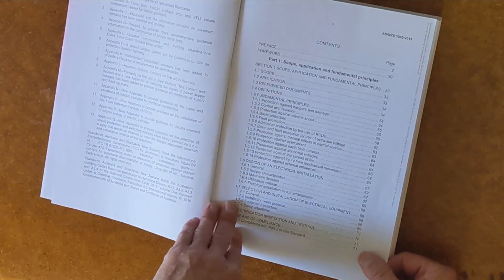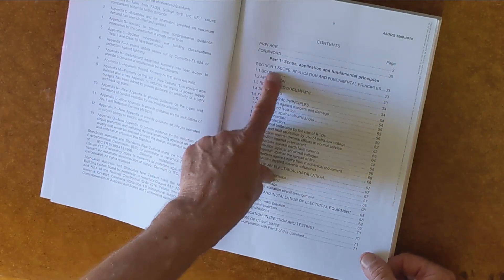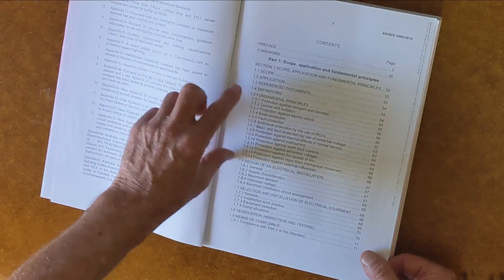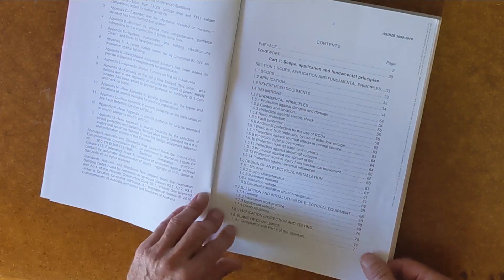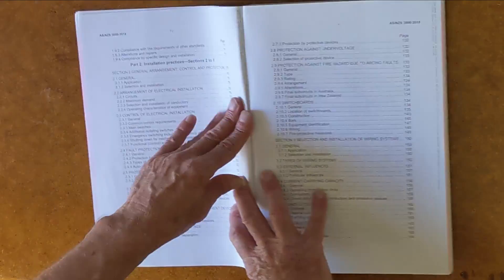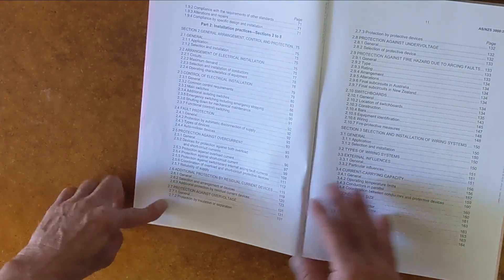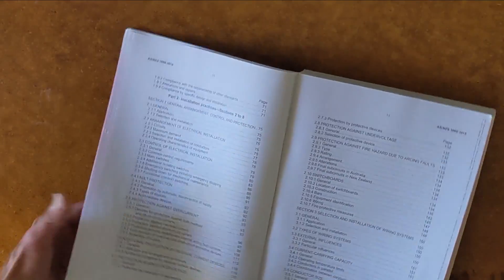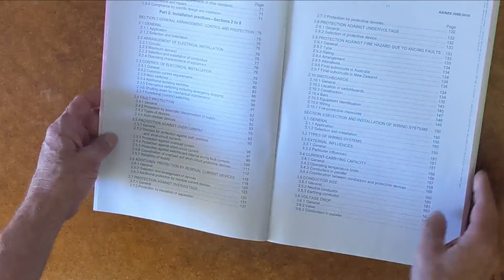If you turn to the contents, you can see the break up of the book. We've got section one. This is our definitions, fundamental principles and so on. Then we've got part two. That's the part that has not been highlighted. All of that is part two. Now, part two is broken up into sections.